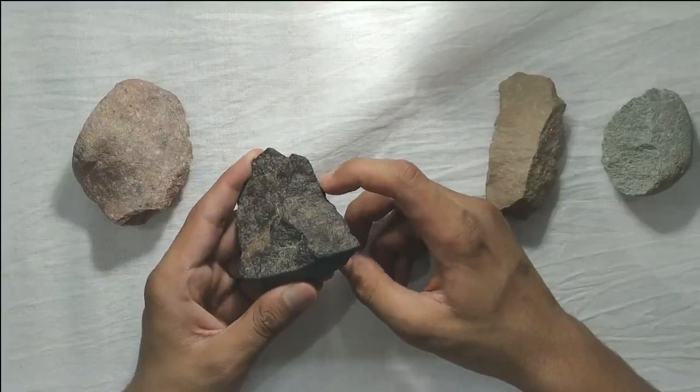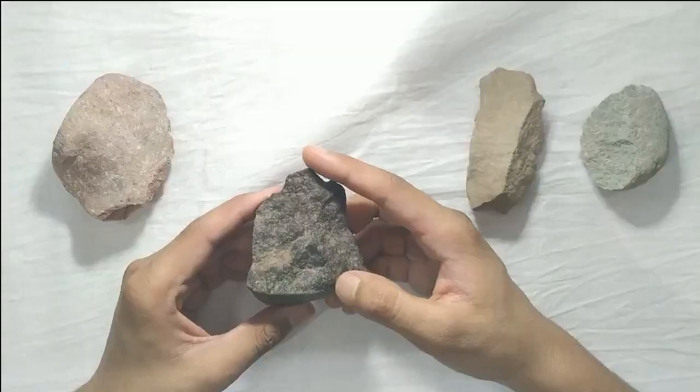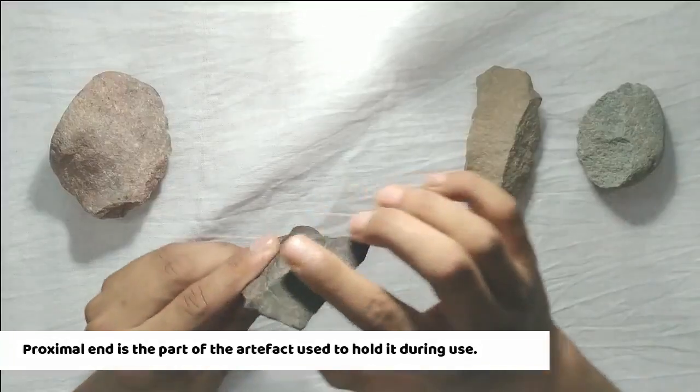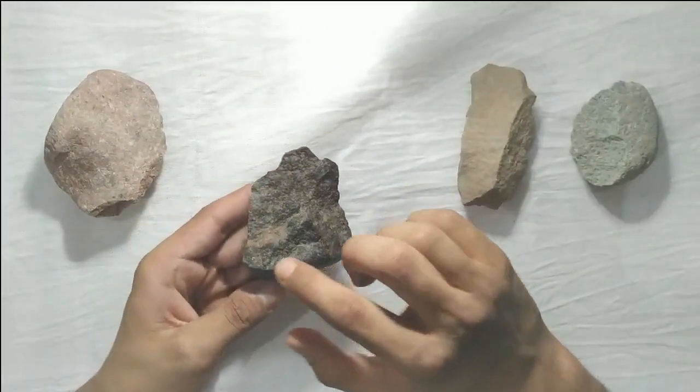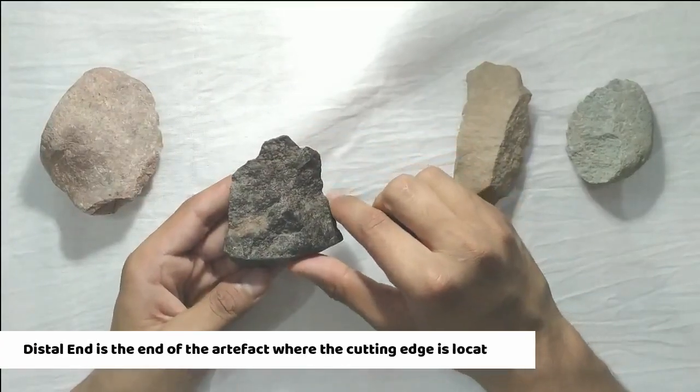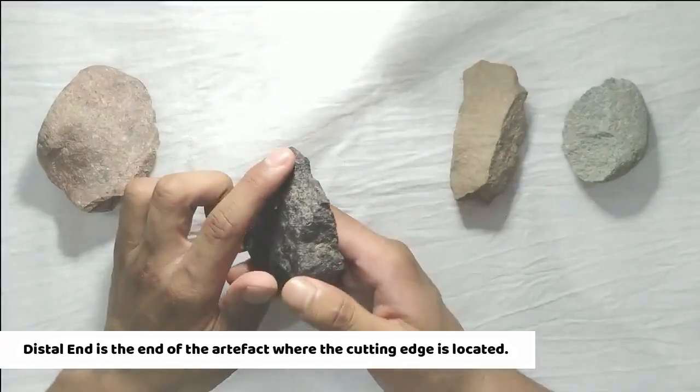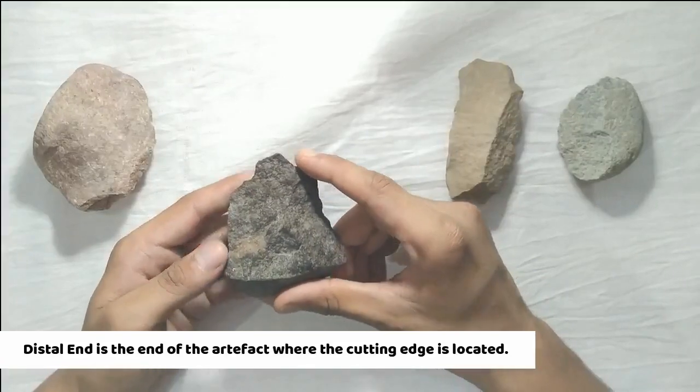The point where the strike was made to remove the flake is known as the point of percussion. The proximal end of the tool is the one that was used to hold the stone tool and has a button to it. The distal side is one which has the working or cutting edge. This is usually sharp and can be easily identified.